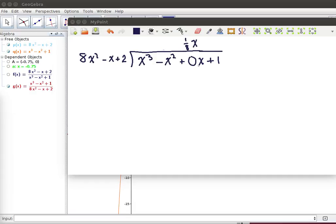When doing long division, we always line the power of the variables up above where they go. So putting the 1/8 here, 1/8 x here, and then multiplying, we get that 1/8 x times this polynomial gives us the x³. That's why we chose 1/8 x.